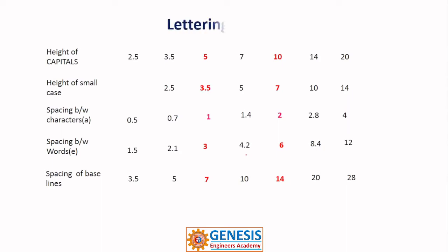Suppose lettering B, generally we follow this lettering B type. See this one, 5, small case is 3.5. You forget about this. The space between characters is 1 mm. It is easy to leave this space or maintain this space. And the spacing between words is 3 mm. The spacing between baselines is 7.